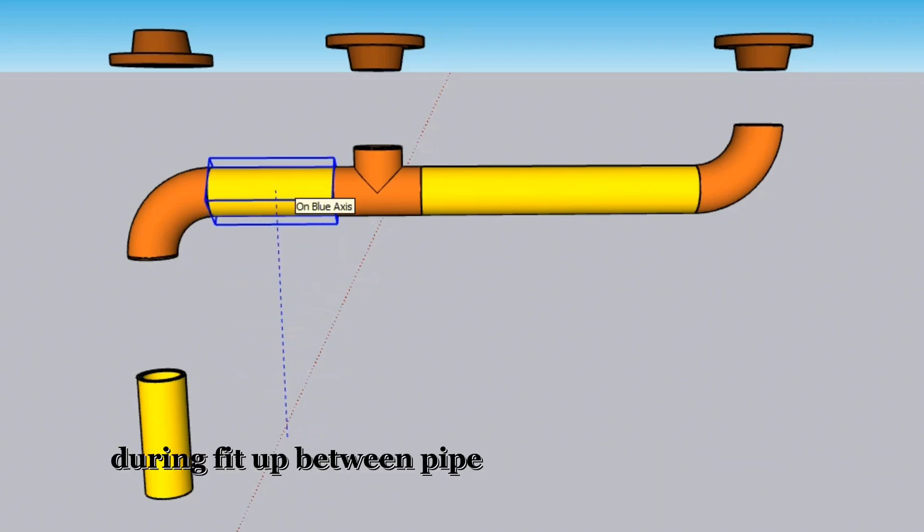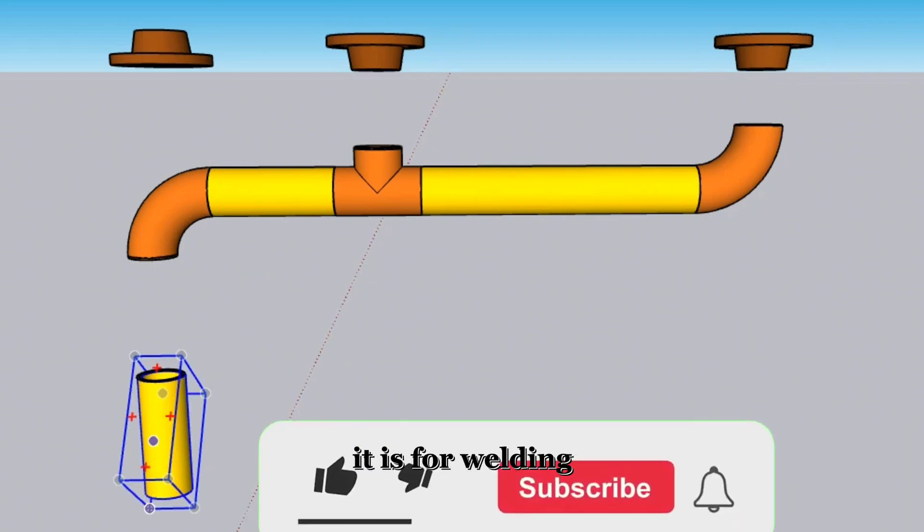During fit-up, between pipe fittings and pipe pieces should be a gap, approximately 3 mm. It is for welding.